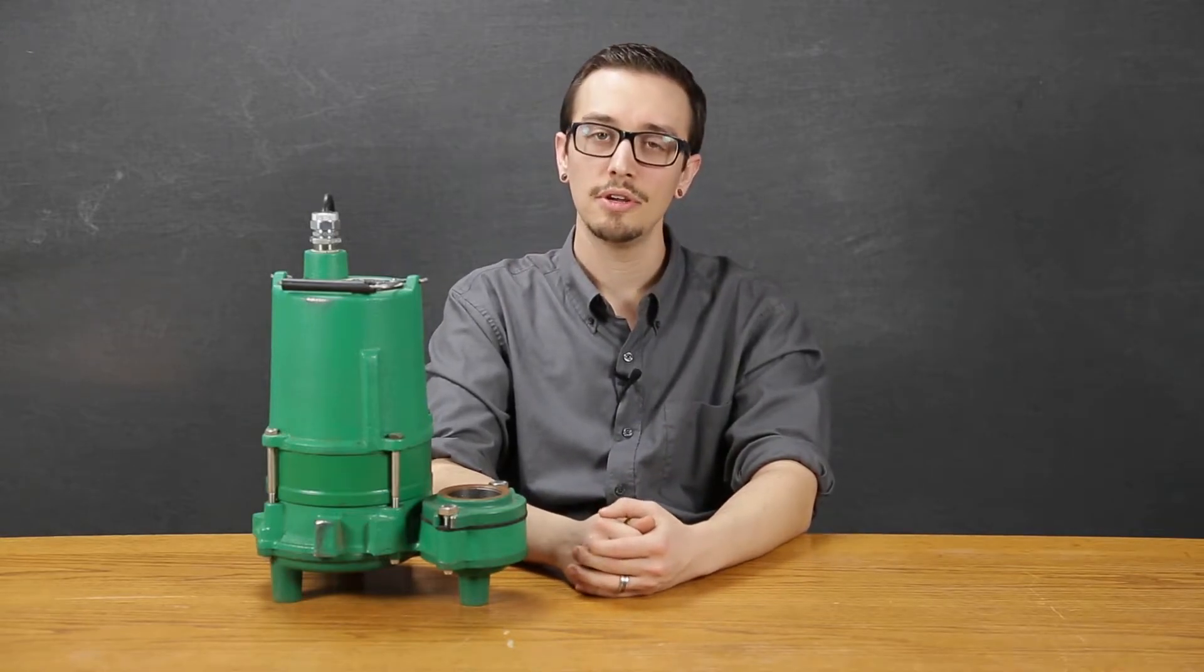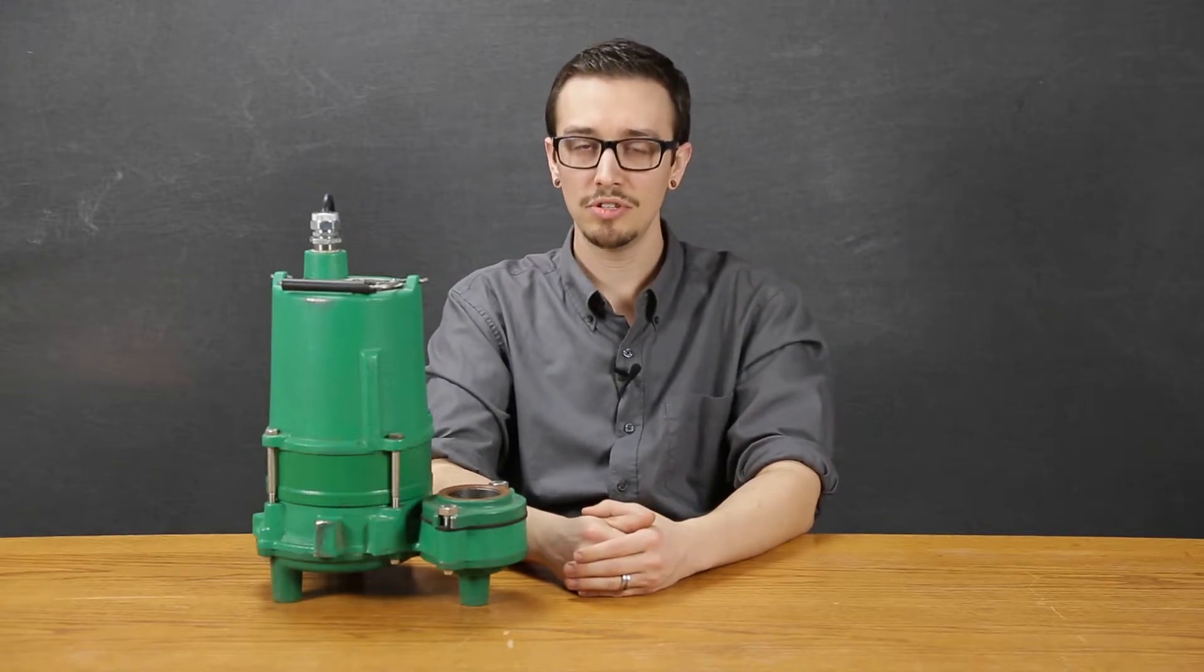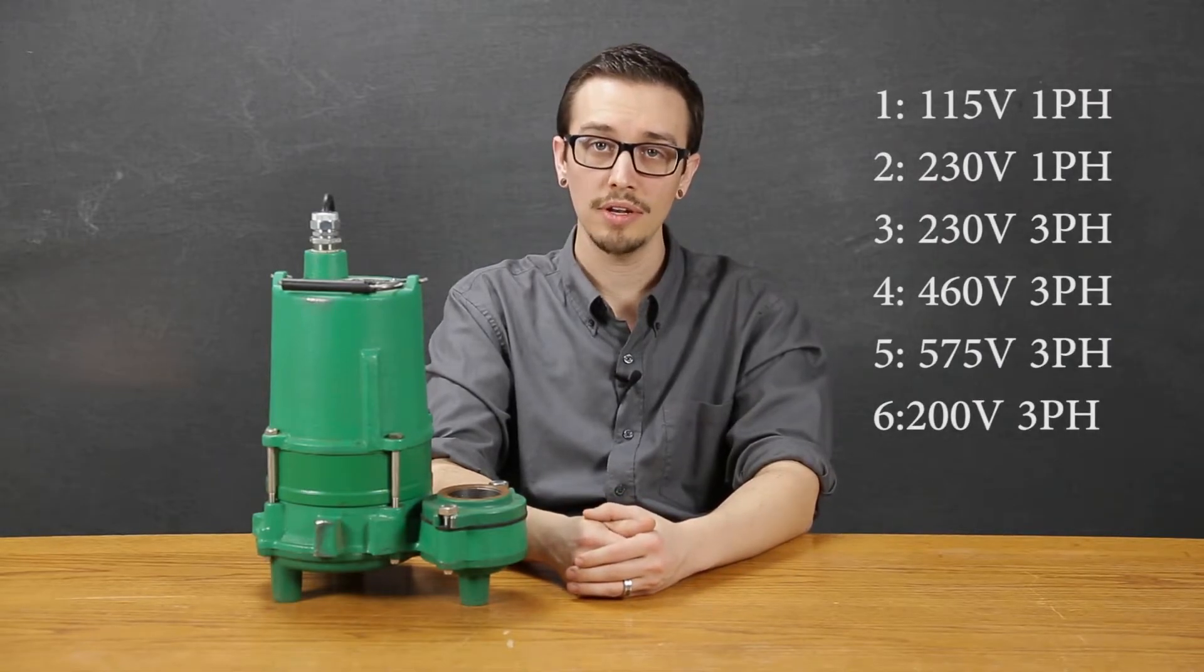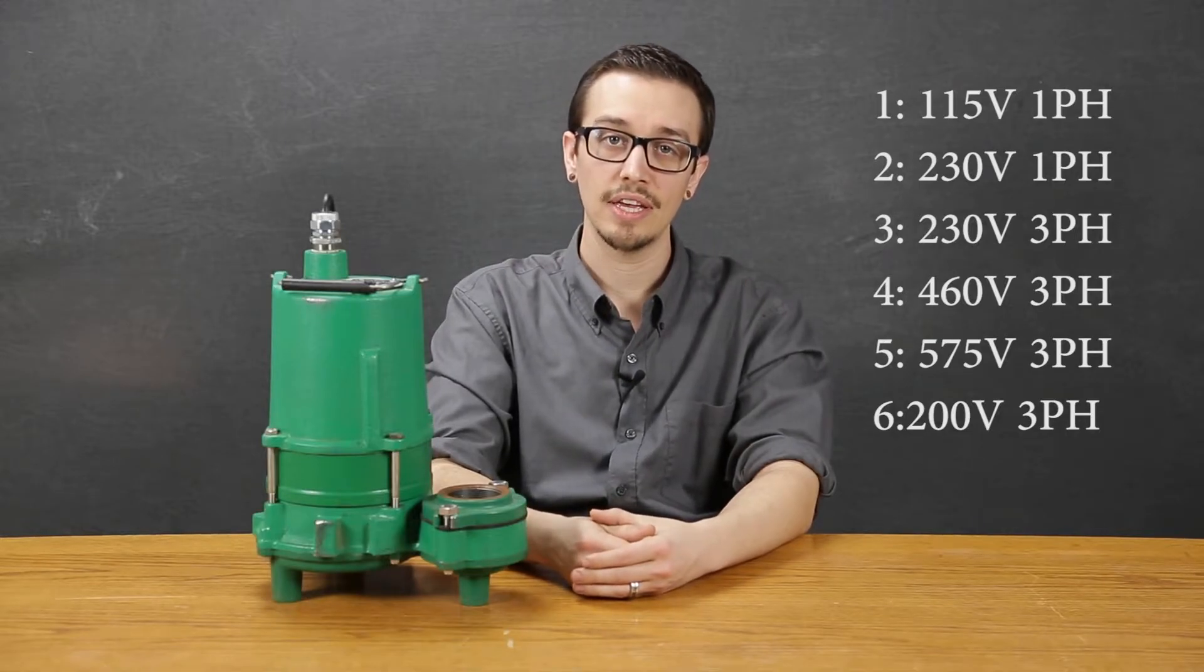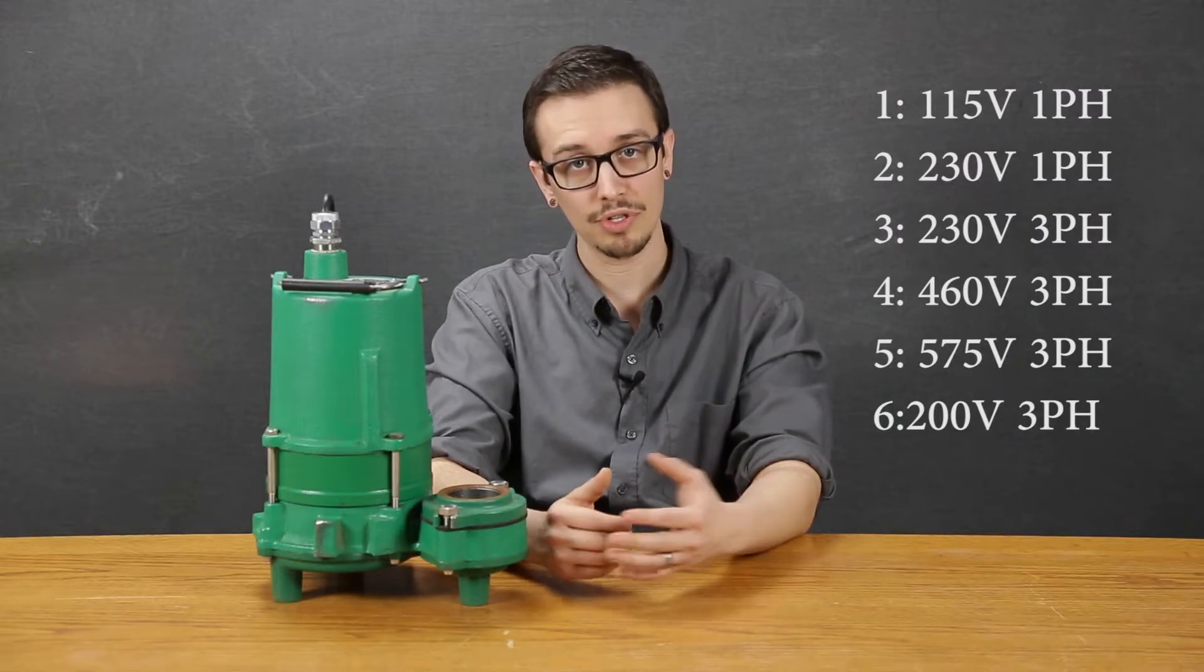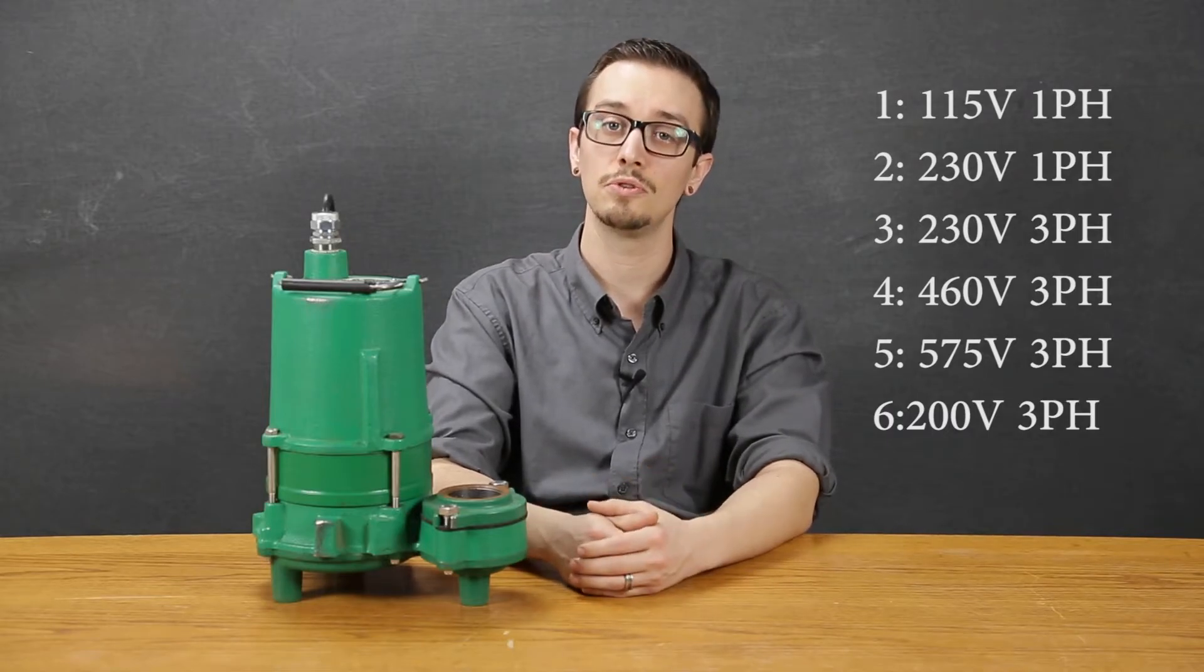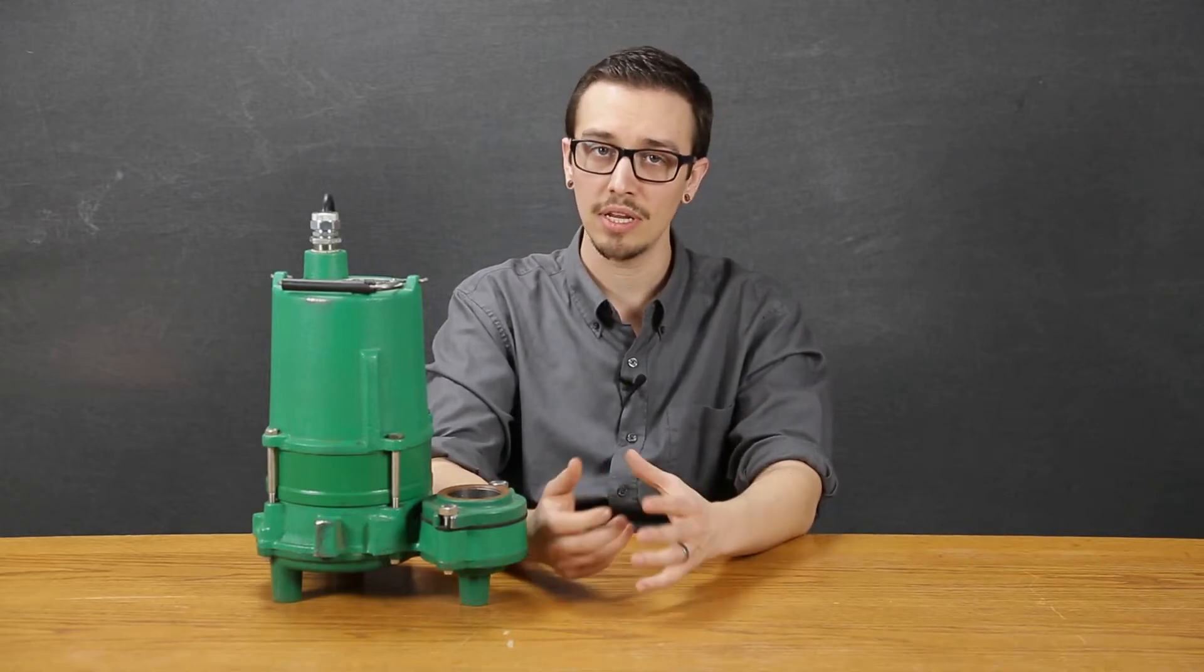When it comes to identifying the voltage, you simply need to look at the model number. On this pump, the voltage is indicated after the H in the model number. A 120 volt would be a 1, a 230 volt single phase would be a 2, and then you would have a 3 for 230 volt 3 phase, a 4 for 460 volt 3 phase, 5 for 575 volt 3 phase, and a 6 for 200 volt 3 phase.